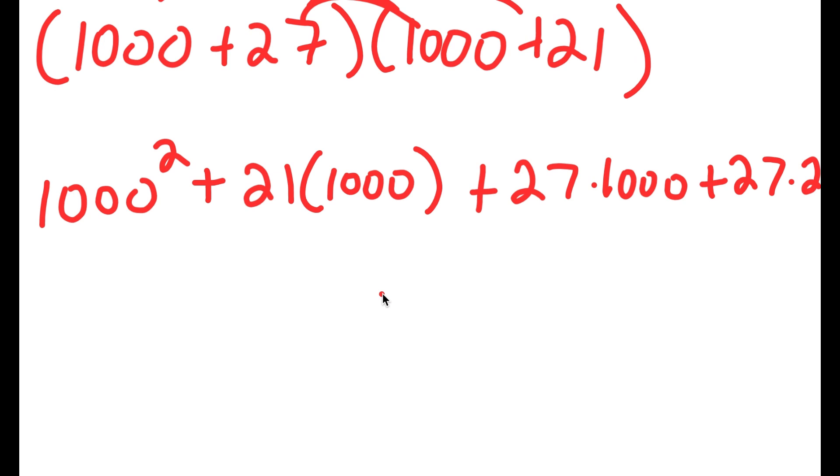Now, 1000 squared, that's equal to 1,000,000 plus 21 times 1000 is 21,000 plus 27 times 1000 is 27,000 plus 27 times 21 is 567.